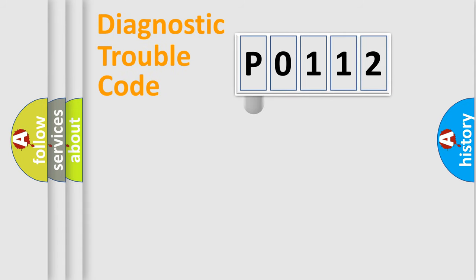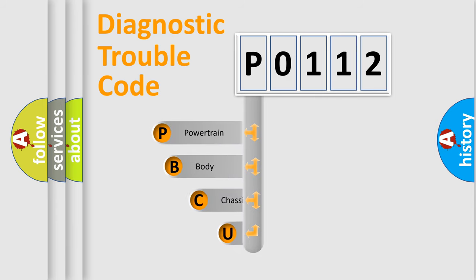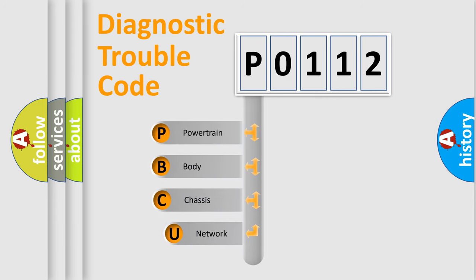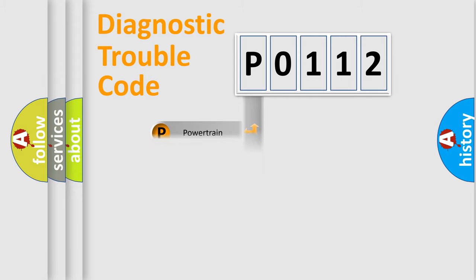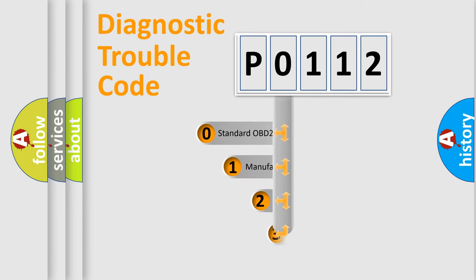Let's look at the history of diagnostic fault code composition according to the OBD-2 protocol, which is unified for all automakers since 2000. We divide the electric system of an automobile into four basic units: Powertrain, Body, Chassis, and Network. This distribution is defined in the first character of the code.